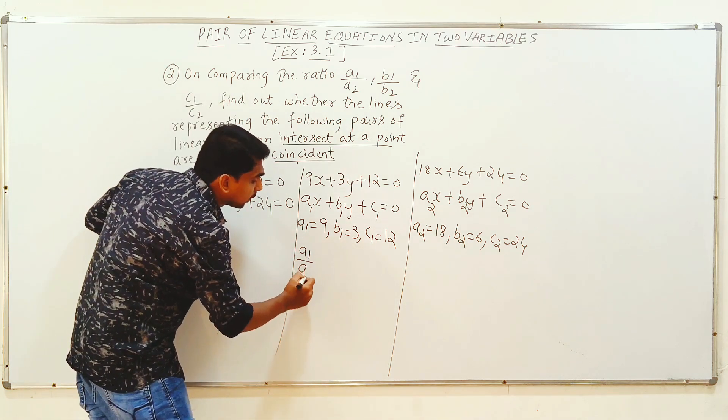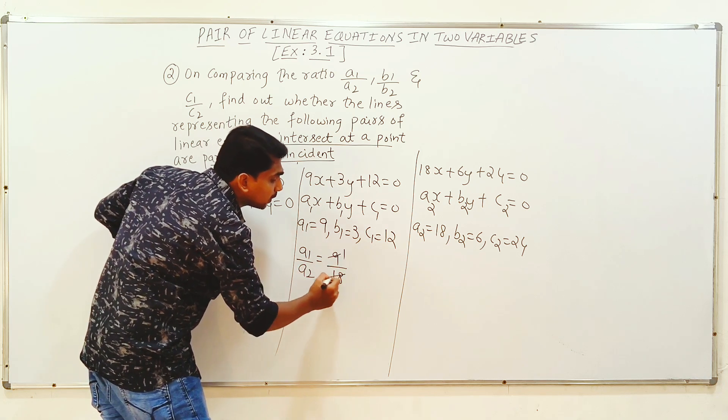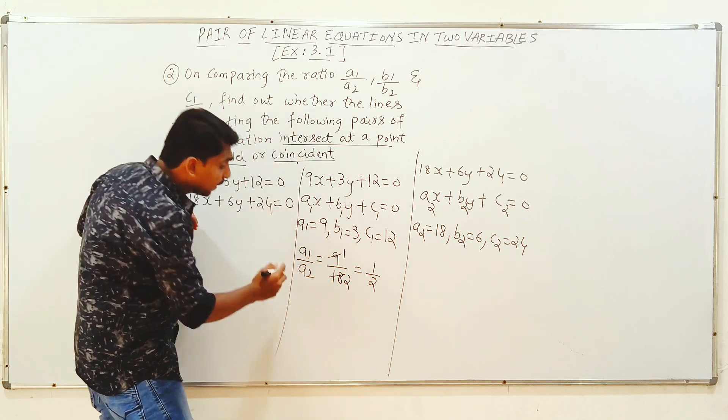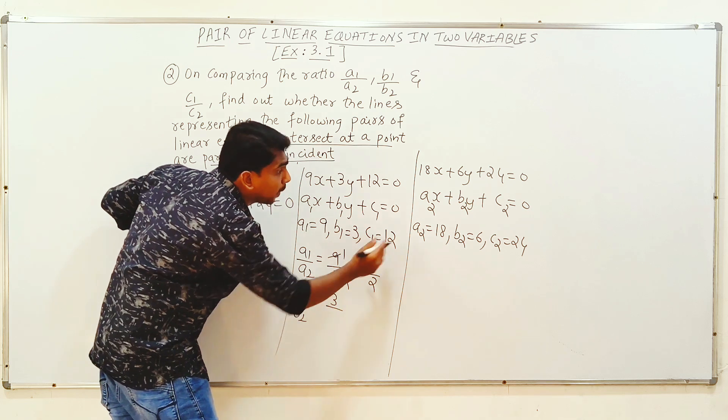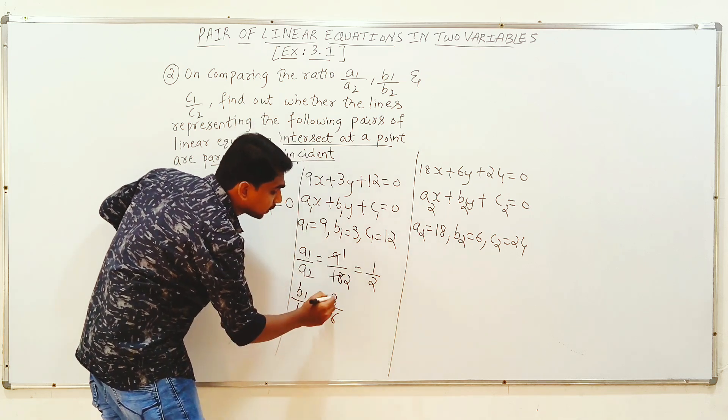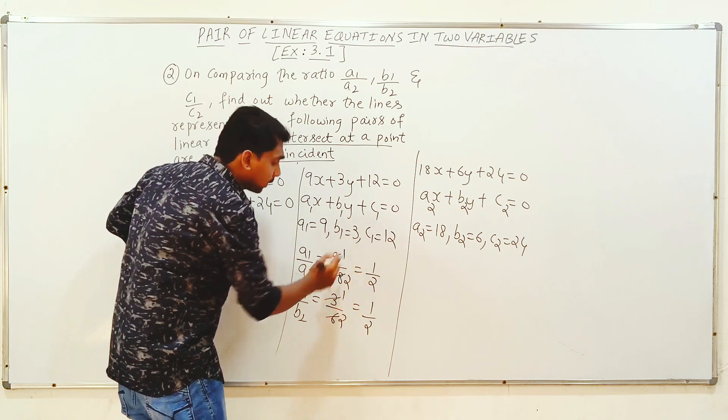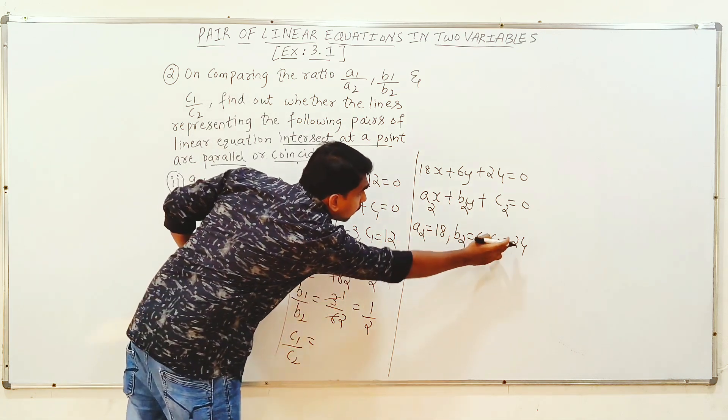A1 by A2. First A1 by A2, 9 divided by 18, 1 by 2. Next, B1 by B2, B1 by B2, 3 divided by 6, B2 value 6, 1 by 2. Last, C1 by C2, 12 by 24, 1 by 2.